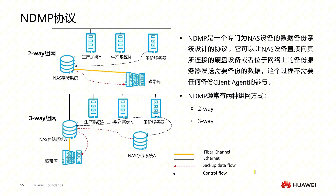However, because the backup medium is directly connected to the NAS storage system, the tape library can only back up that specific NAS storage, and the cost of tape backup media is relatively high. To allow different NAS storages to share tape devices, NDMP also supports a three-way network backup method. Under this method, the NAS system can transmit backup data through a dedicated backup network to a NAS storage system connected to the tape library, and then that NAS storage backs up the data to the tape library.